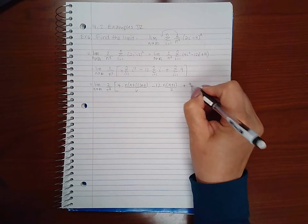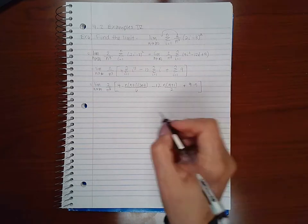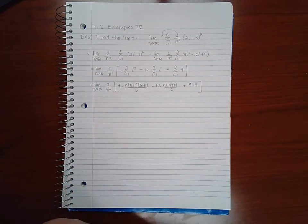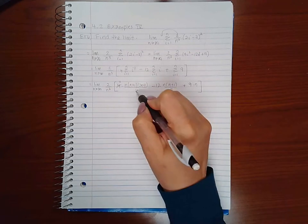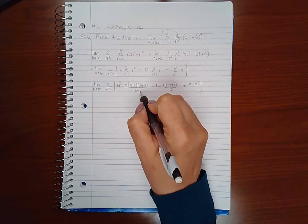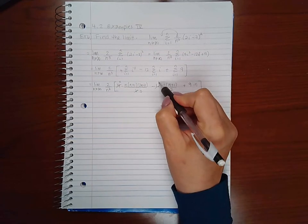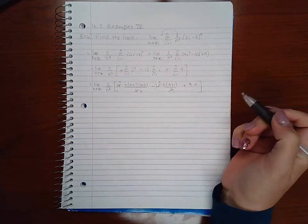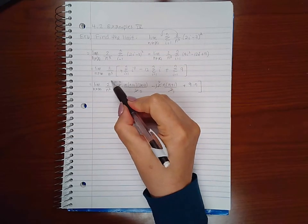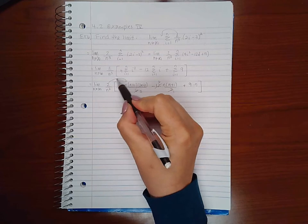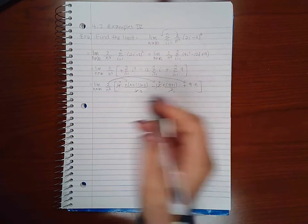Plus 9 times n for just a constant. Now let's simplify this. I can actually simplify the 4 and the 6, that becomes 2 and 3. Here I can simplify the 12 and the 2, that'll become 6 and 1. At the same time I am going to go ahead and distribute this 2 over n cubed to each of these three terms here.